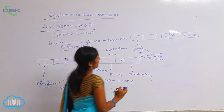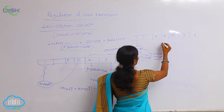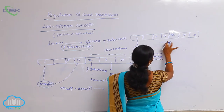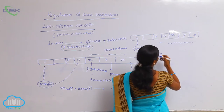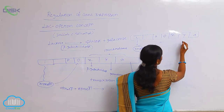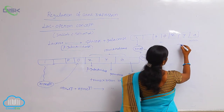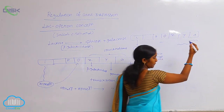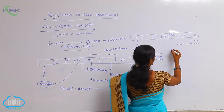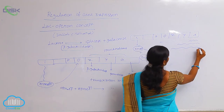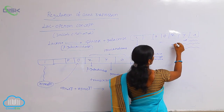Then the operator region is free from the repressor protein, and mRNA synthesis proceeds. This means galactopermease, acetyl transferase, permease enzyme, and beta-galactosidase are all produced — the enzymes are produced without any interruption.